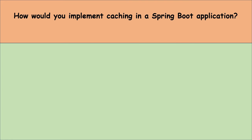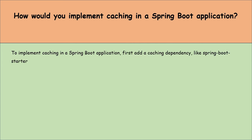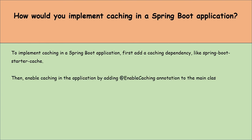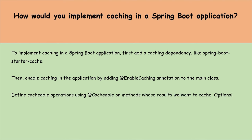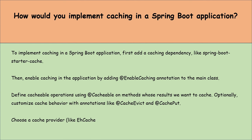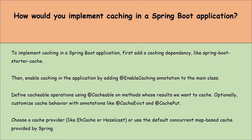How would you implement caching in a Spring Boot application? First, add caching dependencies like Spring Boot starter cache. Then enable caching in the application by adding the @EnableCaching annotation to the main class. Then define cacheable operations using the @Cacheable annotation on methods whose results we want to cache. Optionally, customize cache behavior with annotations like @CacheEvict and @CachePut. Then choose a cache provider like EhCache or Hazelcast, or use the default ConcurrentMap-based cache provided by Spring.